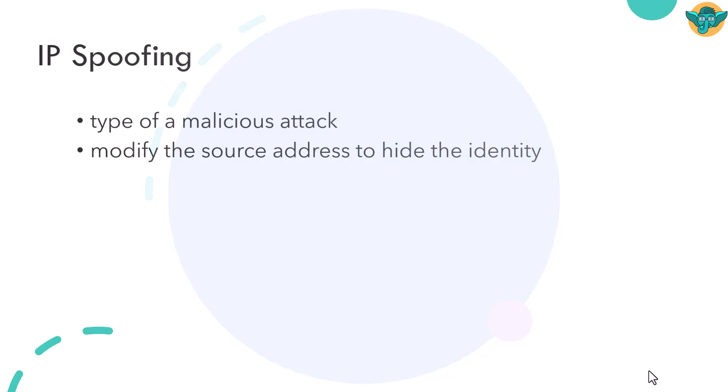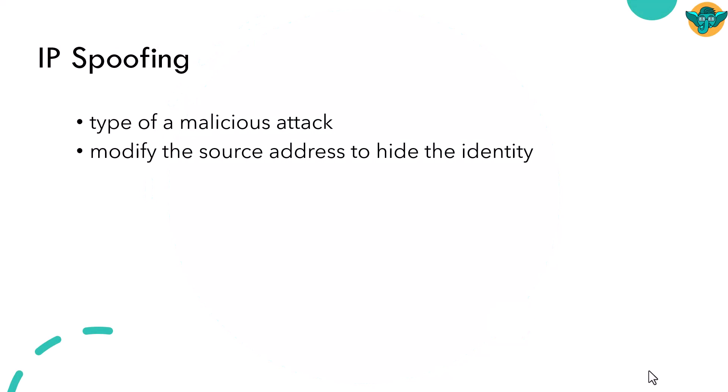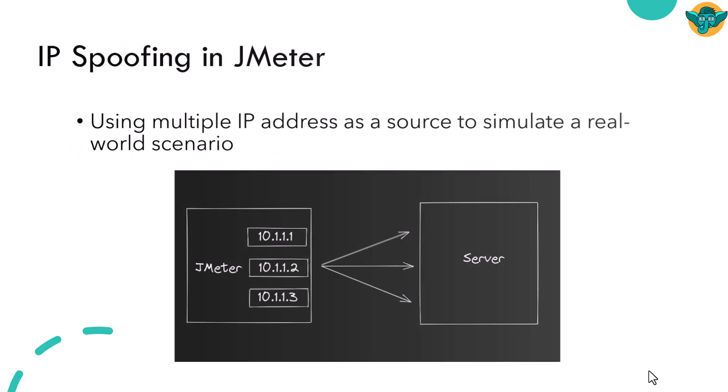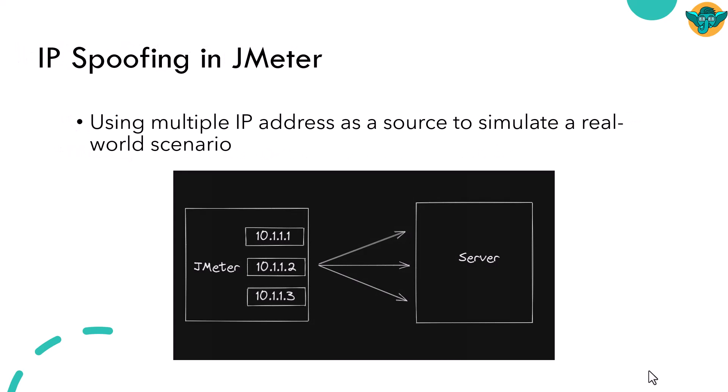IP spoofing is a type of malicious attack where the hacker modifies the source address to hide the identity. In JMeter, you will approach a similar strategy where you will be using multiple IP addresses as a source to simulate the real world scenario.